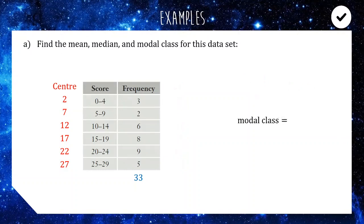And the last one — very simple — modal class just means the one with the highest frequency. You can see that is the 20 to 24 range. Piece of cake.